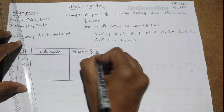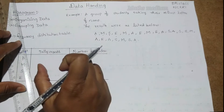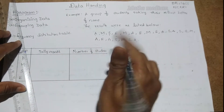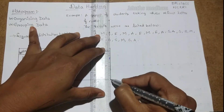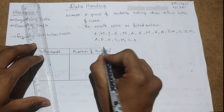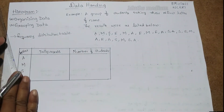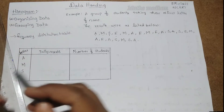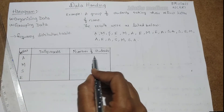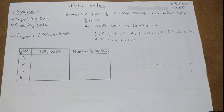We have to calculate the number of students using the tally marks. The frequency distribution table needs: the subject — here that is the letters or any data — the tally marks showing how frequently each item occurred, and the number of students or number of repetitions.